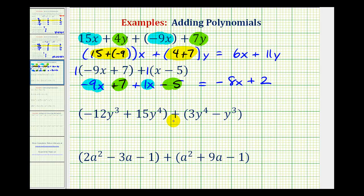Again, for our third example, we can just drop the parentheses when we have addition, or we can think of distributing a positive 1 in both cases. So we'd have negative 12y to the third plus 15y to the fourth plus 3y to the fourth. And again, we could write this as plus negative y to the third, or just minus y to the third. Let's go ahead and put a 1 in here. Again, we'll identify the like terms. Here we have two y cubed terms, and here we have two y to the fourth terms.